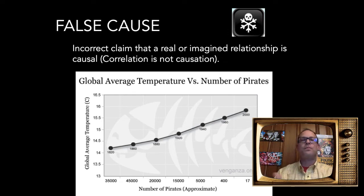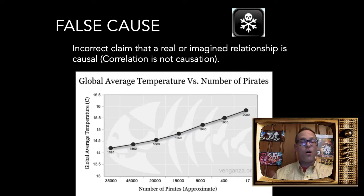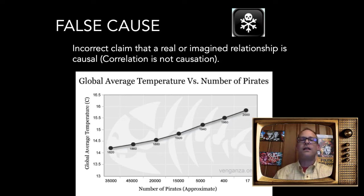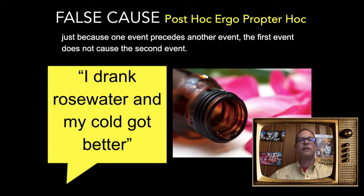Another example: crime rates and the teaching of evolution — people say crime is going up as evolution is being taught. These sorts of arguments are out there. Anytime someone is making a causal claim, be careful and make sure it's really well substantiated.